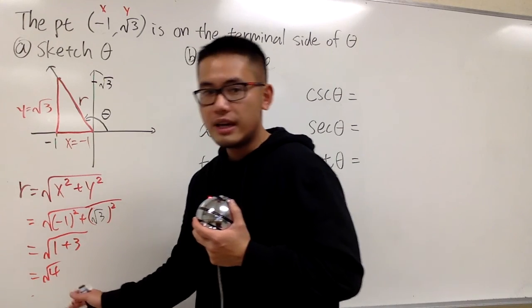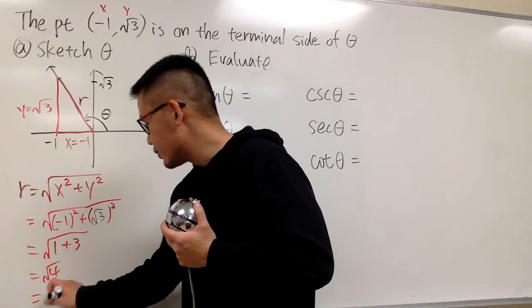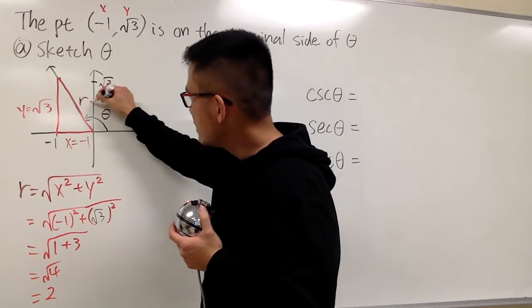And take the square of that, which you know, at the end, you end down with 2. So r, in this case, is equal to 2.